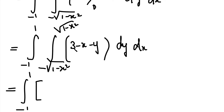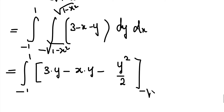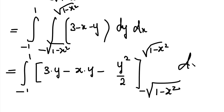The three terms are integrated with respect to y. The first term is the integral of 3 dy; since 3 is constant, it equals 3y. Then minus: the second term is the integral of x dy; since x is constant in this inner integration, it equals xy. Then minus: the third term is the integral of y dy, which equals y² divided by 2. The limit is from minus root of 1 minus x² to plus root of 1 minus x².